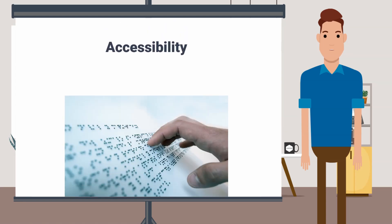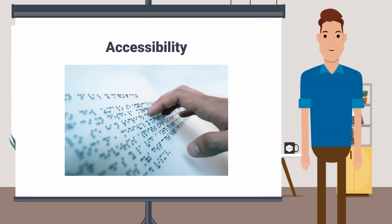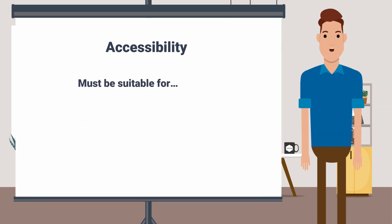Now in number four, accessibility features are the most important features for your website. Your website should be well suited for disabled people. I mean, a website should be suitable for a colorblind person, for a hearing disabled person, or a person with a vision problem. I will discuss this in detail in another video, so keep in touch for that.